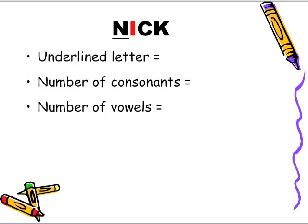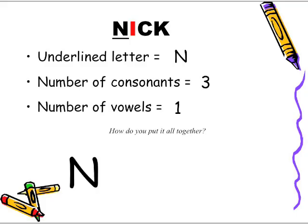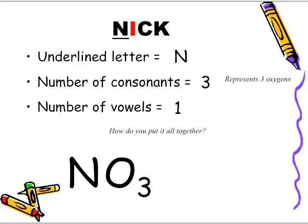Nick — the underlined letter is N. How many consonants does the word Nick have? It has three. How many vowels? One vowel. So how do we put it all together? We start off with the letter N for nitrogen. The number of consonants represents three oxygens, so we write N and then O3. The vowel now represents the negative one charge, and because there's only one vowel in the word Nick, there is only one charge and that charge is a negative charge — negative one.